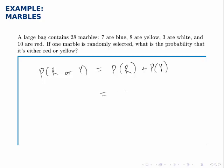So the probability of drawing a red, well there are 10 red marbles and 28 total, and there are 8 yellow marbles out of 28 total. Adding them together we get 18 out of 28.